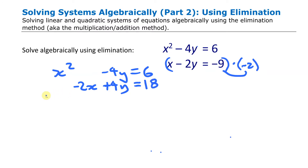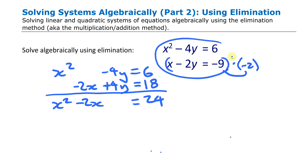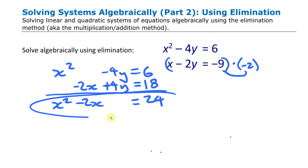Now that I've done that, I can add those two equations together and I get a new equation: x² − 2x. The y terms add to zero, and that equals 24. If these two equations were true before, then this new one is also true, and we can use it to find the x value since we've eliminated y.